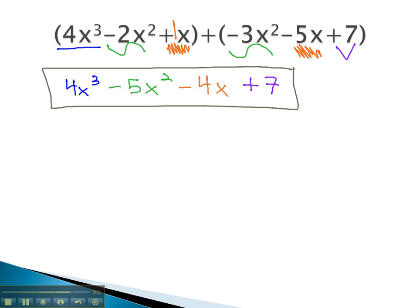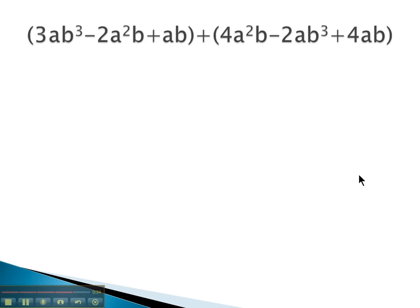Notice as we added the polynomials together, the numbers up front, the coefficients changed, because we are adding them together. But the exponents did not change. With adding and subtracting, you will not see exponents changing. Exponents will stay the same.